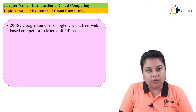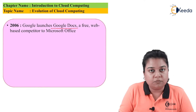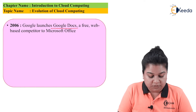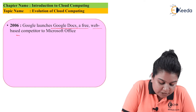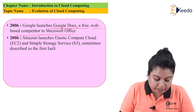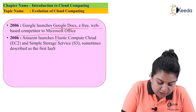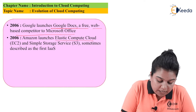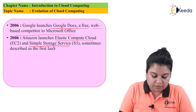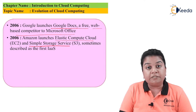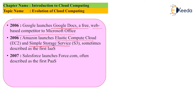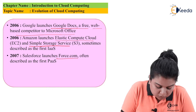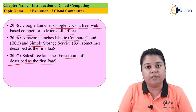Then in 2006, Google launched Google Docs, which is an alternative for Microsoft documents — a free web-based competitor to Microsoft Office. Also in 2006, Amazon launched EC2, known as Elastic Compute Cloud, and S3, that is Simple Storage Service, sometimes described as the first infrastructure as a service. In 2007, Salesforce launched Force.com, often described as the first platform as a service.